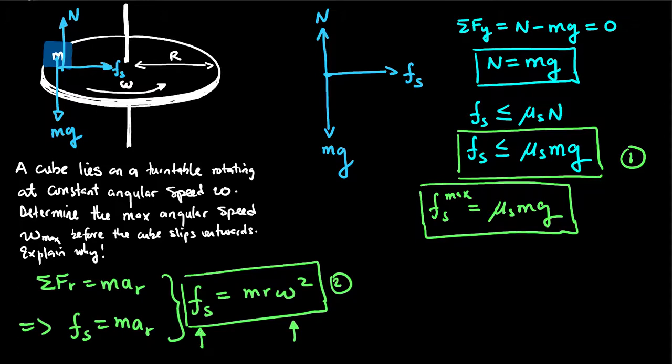That means that as we continually increase or gradually increase the angular speed of the cube of the turntable, the centripetal force required to keep the cube moving in a circle consequently will also increase.